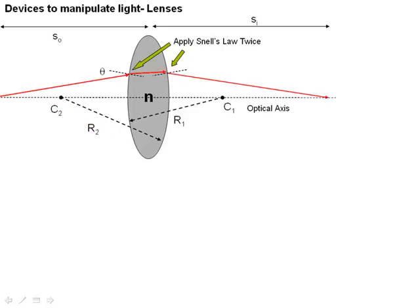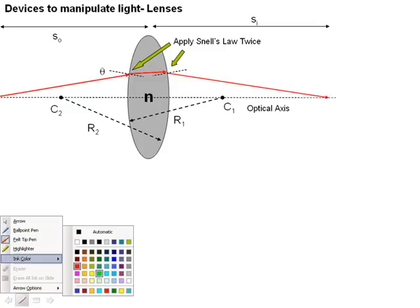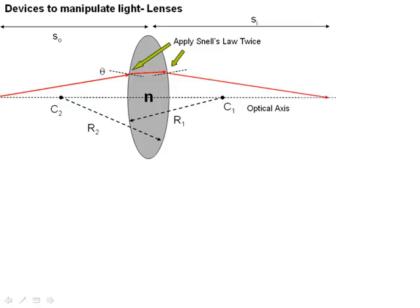The way a lens works is light starts from some point, and the way this is conventionally drawn is that point is over on the left side of the lens, and this is called the object. Rays of light from the object come, hit the surface of the lens with index of refraction n, are bent going through the first surface, are bent going through the second surface, and again cross the optic axis at a point that we call the image point.